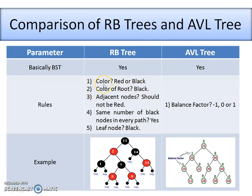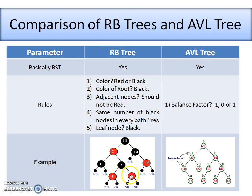Now let's check the color of adjacent nodes — whether any adjacent nodes are both red. No, there are no adjacent nodes in this tree that are both colored red. That's why the third property is also satisfied; no adjacent nodes share the color red.